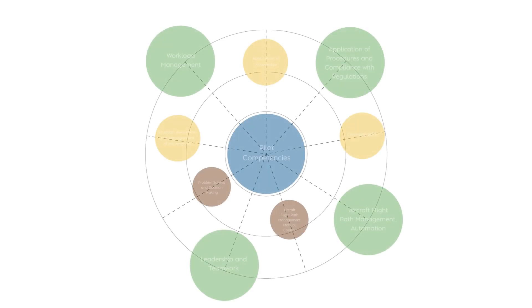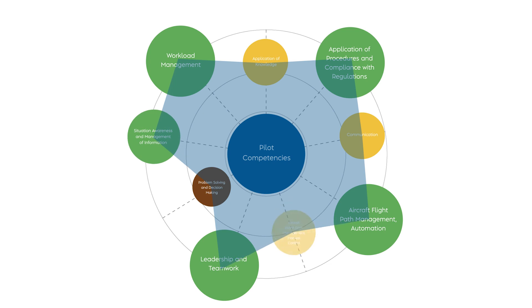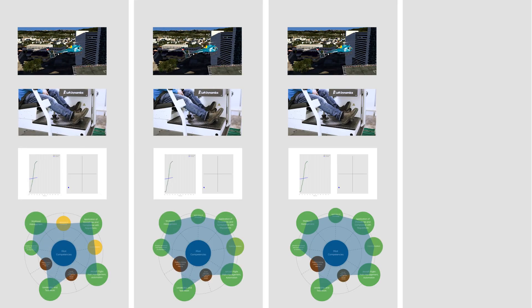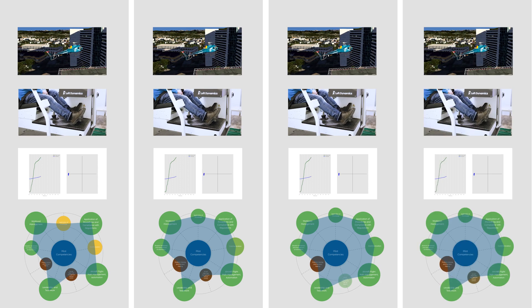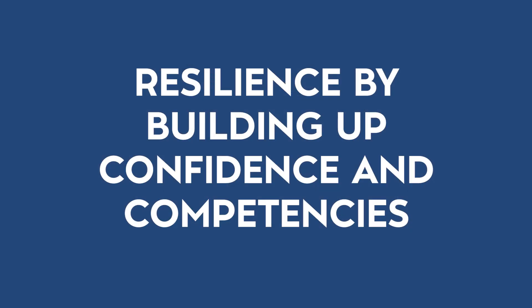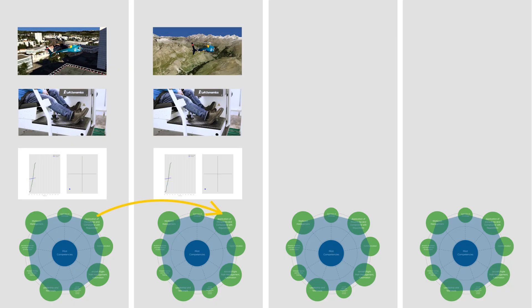Resilience is a central pillar of EBT, and it can be enhanced by building up confidence and competencies in a challenging environment. This is where FSTDs offer a significant advantage over aircraft. FSTDs provide exposure to dangerous scenarios in a hyper-realistic setting, allowing pilots to increase resilience and develop the right responses for when these scenarios arise in the real world.